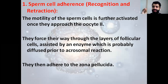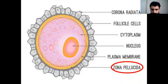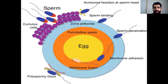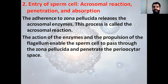Sperm cell adherence: the sperm cells adhere, and their motility is activated when they approach oocyte 2. They move through the follicular cells by action of enzymes and then adhere to the zona pellicida. Here we have the zona pellicida, the egg, and the membrane of fusion — the fertilization membrane, which we will discuss further. Entry of the sperm cell involves acrosomal reaction, penetration, and absorption.